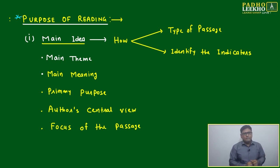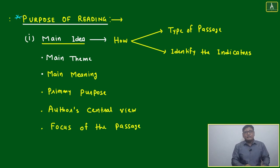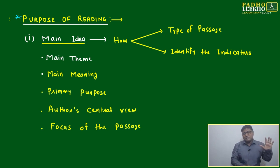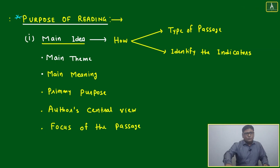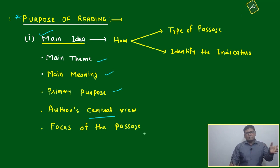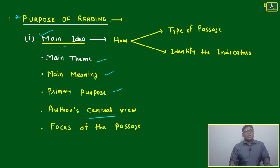Now you start to read a passage — what should your purpose be? If you are going to Ooty, your purpose is to see the scenery, visit the lake, enjoy it. Similarly, when reading a passage, your purpose should be very crystal clear. Your first and most important purpose is to get the main idea. The same thing is written in different versions: main theme, main meaning, primary purpose, author's central view, focus of the passage — multiple ways of writing the same thing.